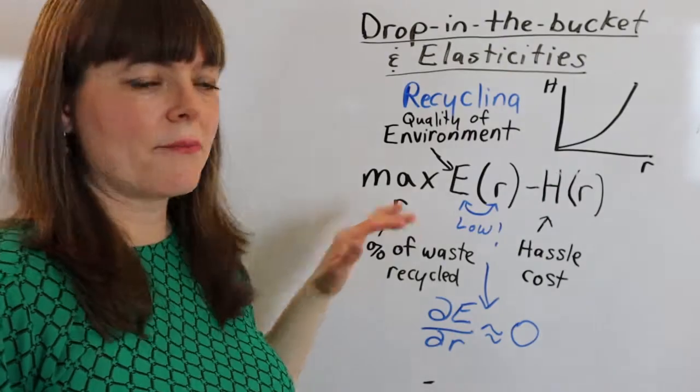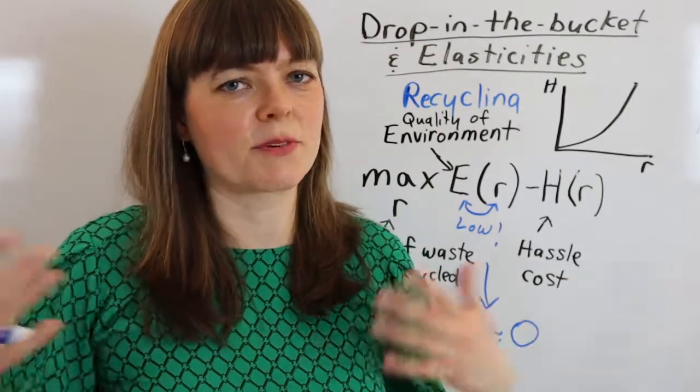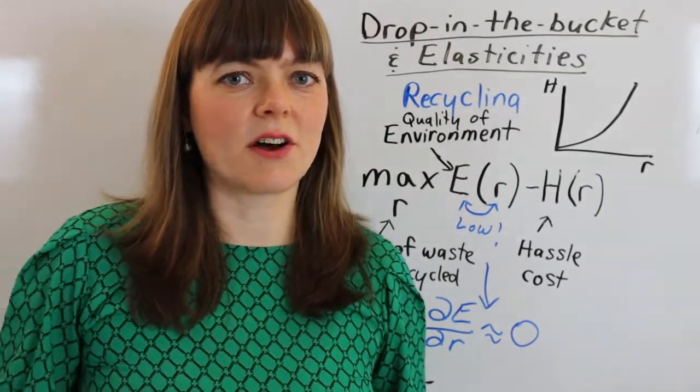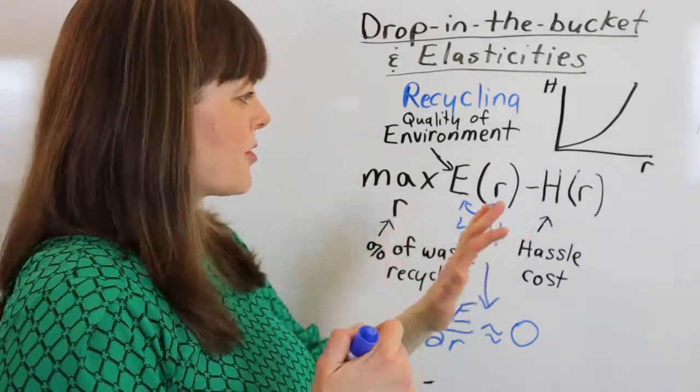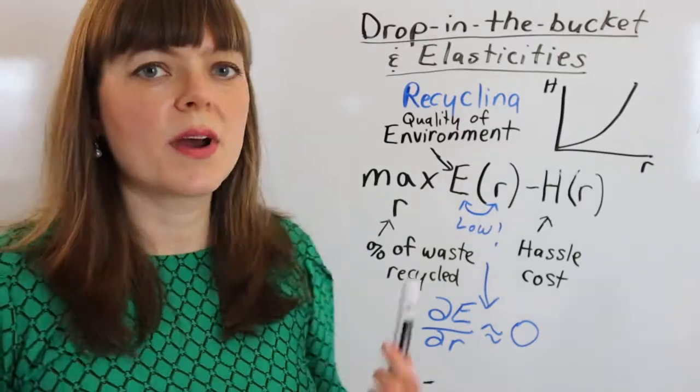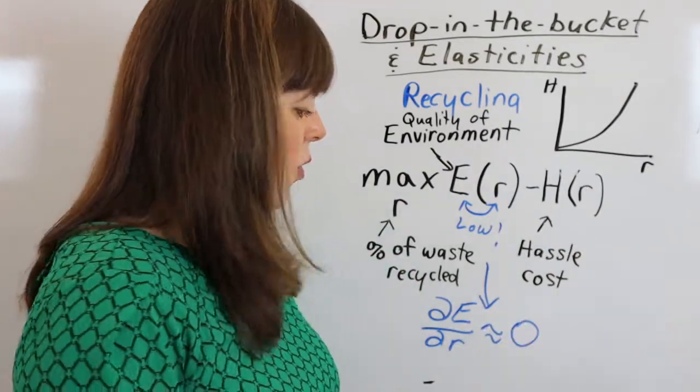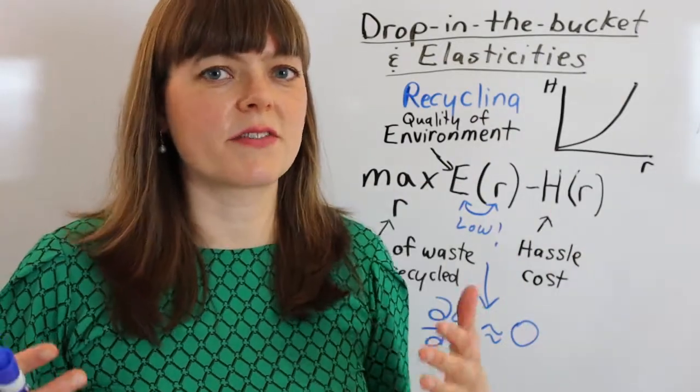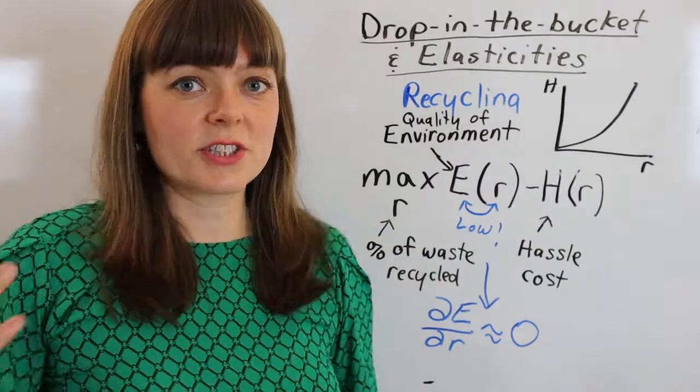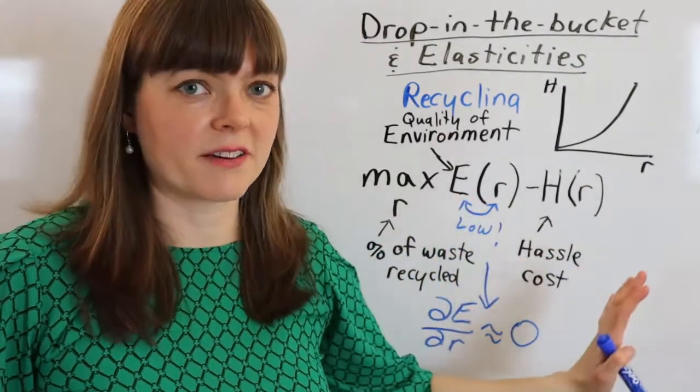In which case, if someone realizes this elasticity is low, then they may have no incentive to actually participate in the efforts to recycle. So how does the government solve this problem? Well, there's a couple of different approaches you can take. And one of them is going to be to let recycling be part of your identity or something that you do because of the social value rather than because your personal recycling has an effect on the environment. In which case, you'd have to add a social utility term to this objective function.